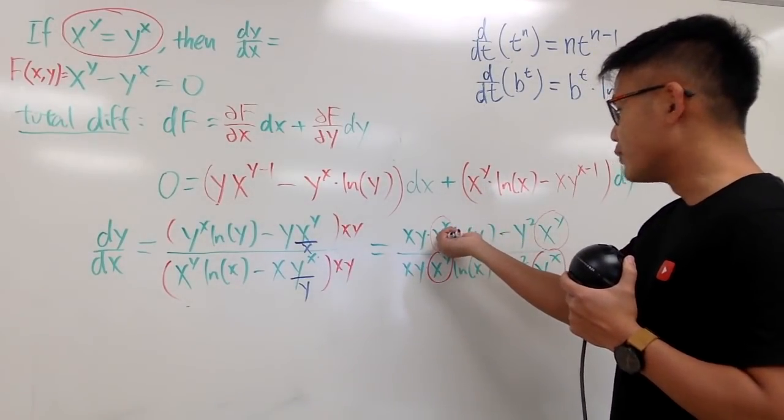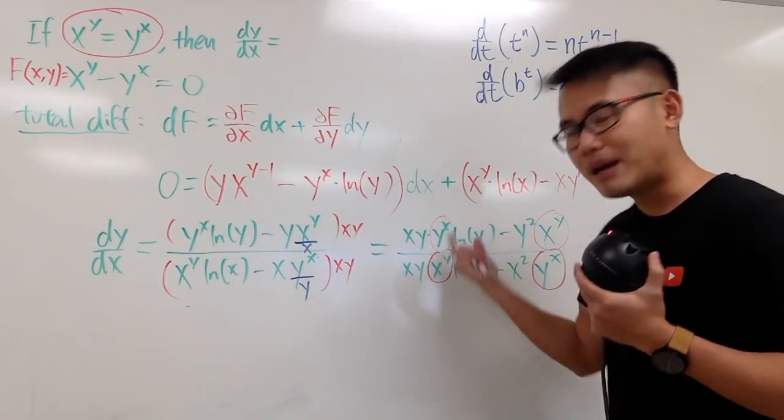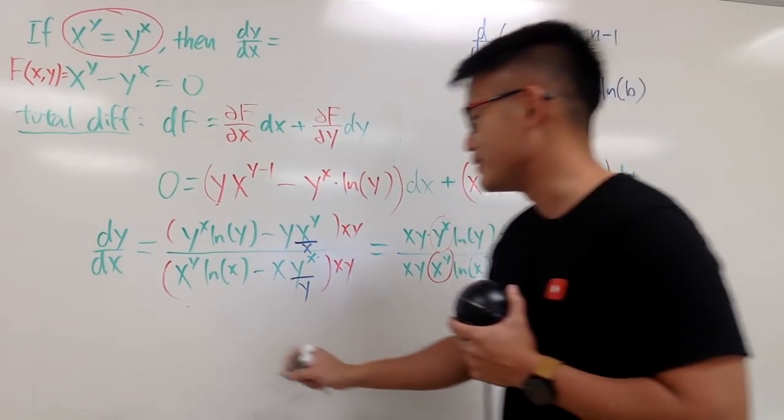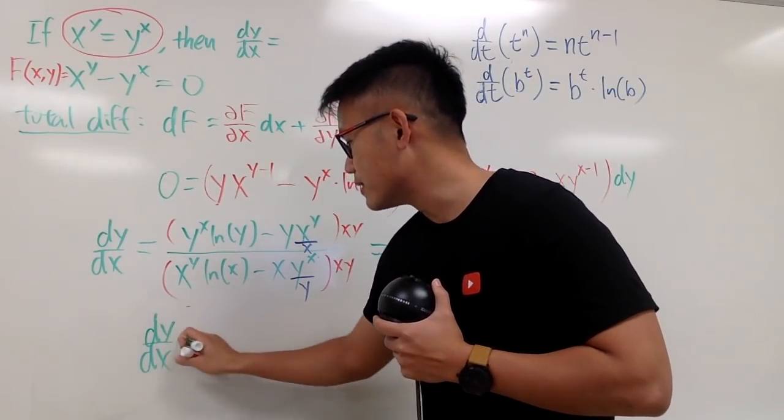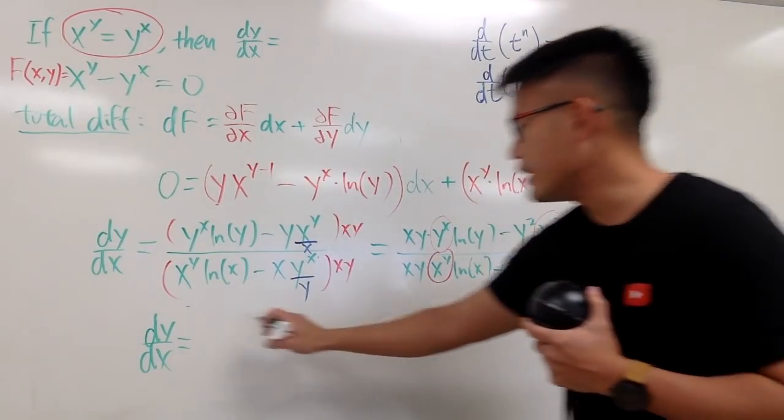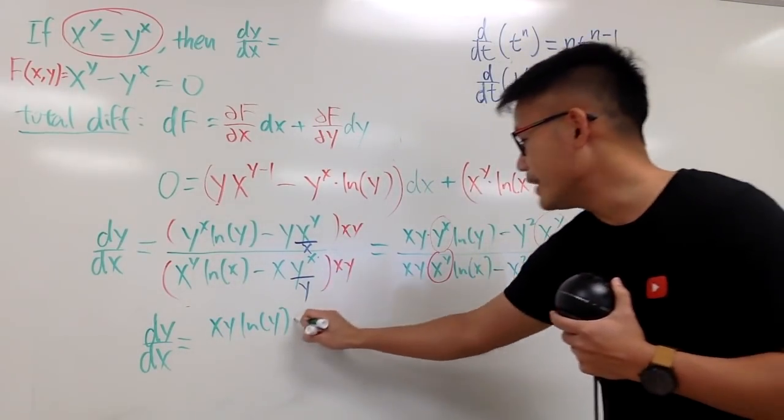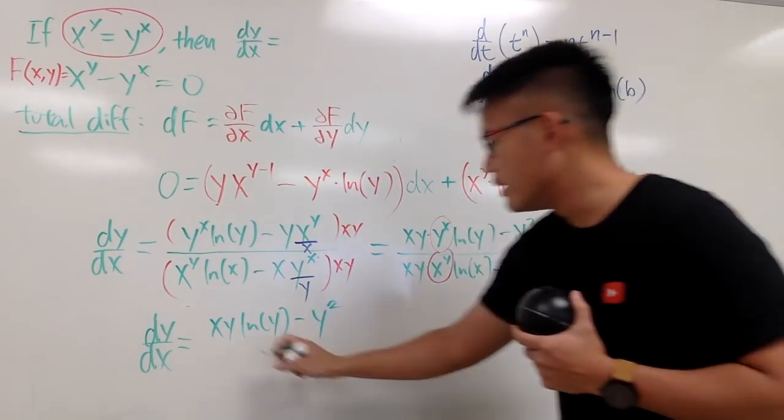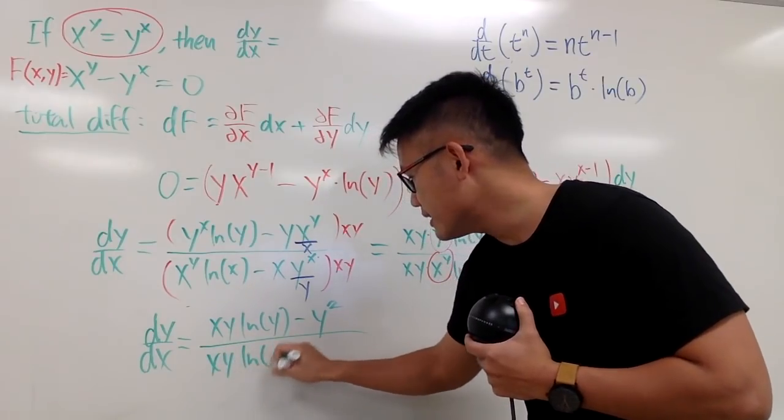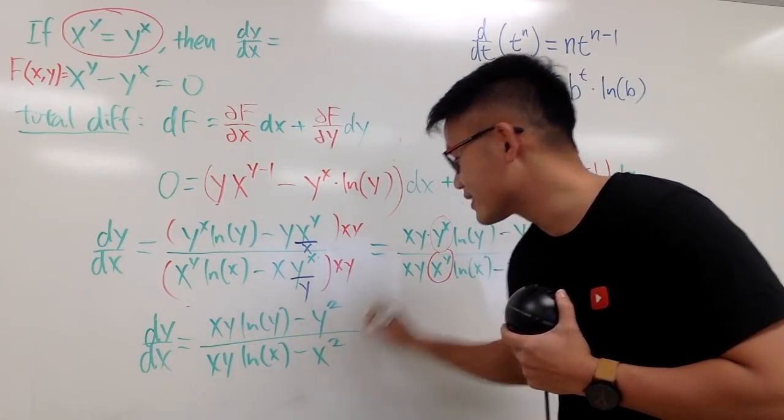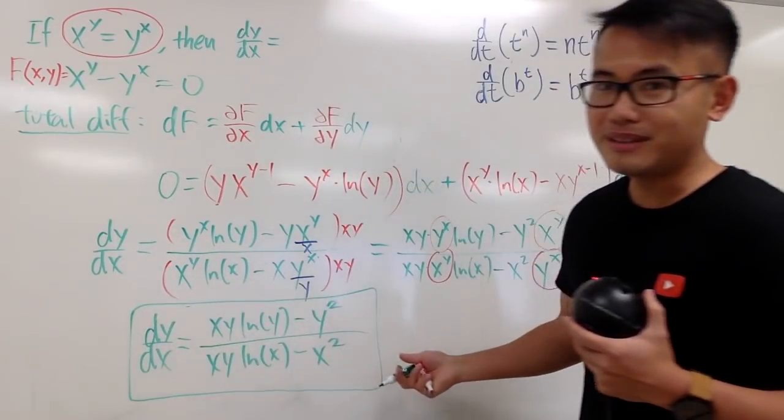Technically, I had to replace this with one over the other, factor it, and cancel it. But hopefully you get an idea. This is Calculus 3. Finally, dy/dx, thanks to Calculus 3, we get xy ln y minus y squared. Once again, I cancel this out already. And divide it by xy ln x minus x squared. And the idea is that we have the same answer with two different methods.